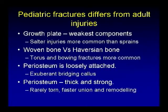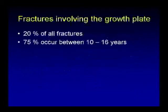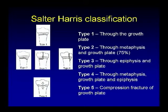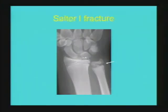Growth plate fractures comprise 20% of all fractures, with about two-thirds occurring in the 10 to 16 years age group. Classification is by the Salter-Harris system, type 1 through type 5. Quick examples of different Salter-Harris types: Salter 1 fracture passes through the growth plate, seen here as widening of the growth plate of the distal ulna compared to the normal radius on the same side.